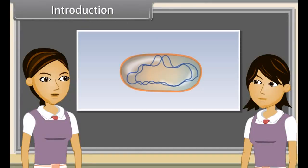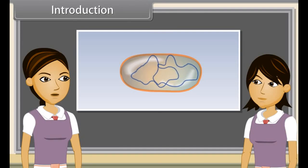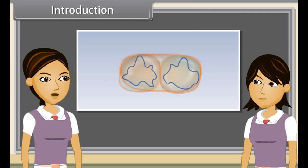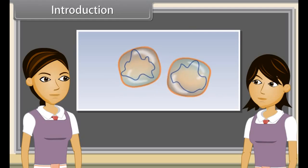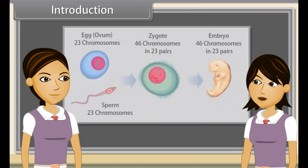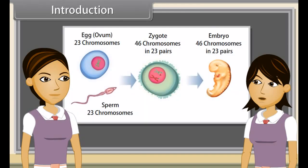Reproduction is the ability of all organisms to produce young ones similar to themselves in most characters. The process which involves fusion of male and female gametes to form a new individual is known as sexual reproduction.